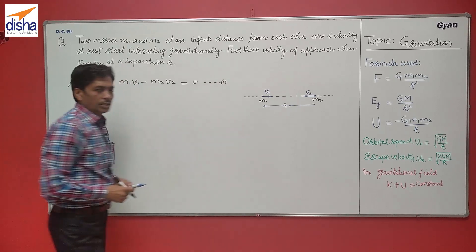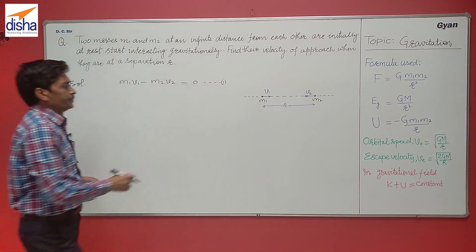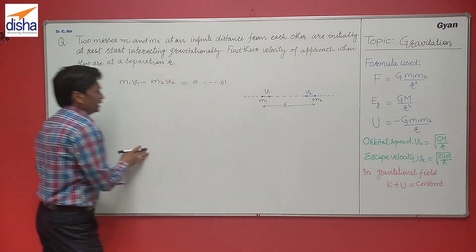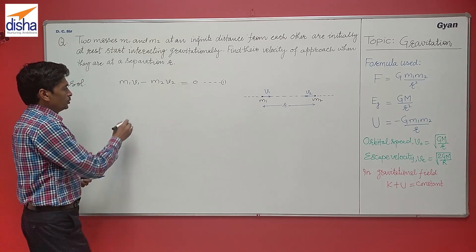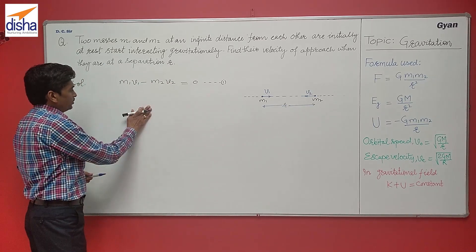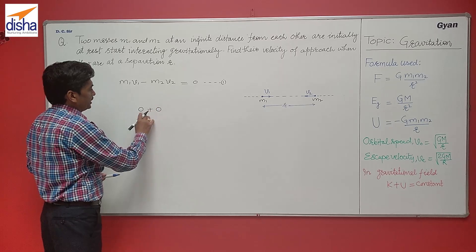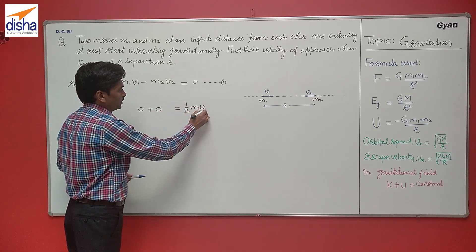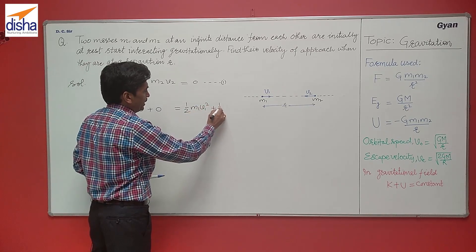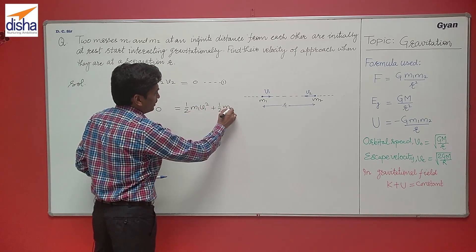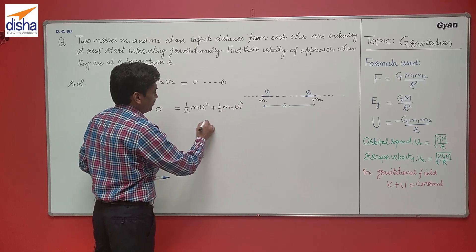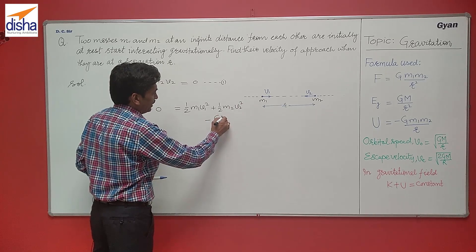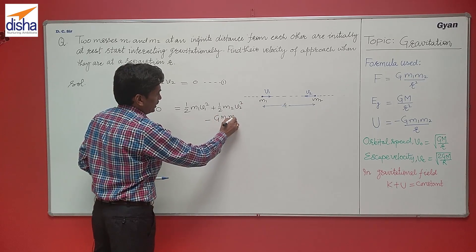Now using conservation of mechanical energy, initially kinetic energy and potential energy both are zero. So by conservation of energy, we can write zero plus zero equals to half M1V1 square plus half M2V2 square minus GM1M2 upon R.